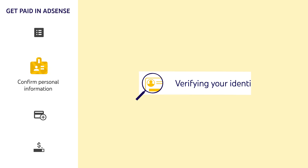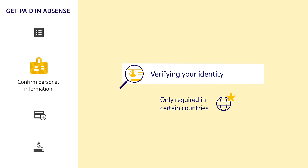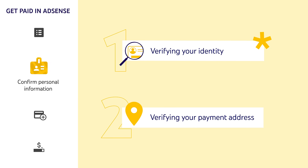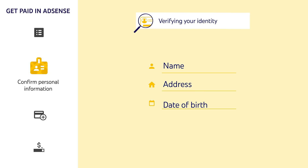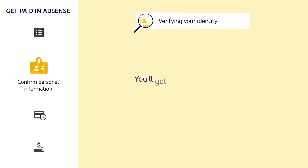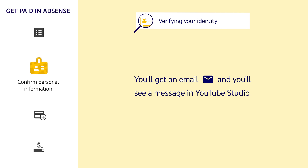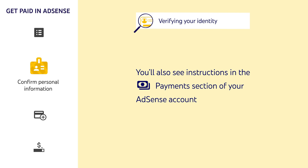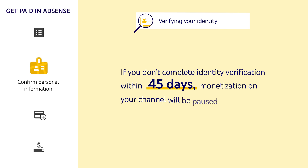Now let's talk about verifying your identity, the other potential step in confirming your personal information. Identity verification is only required in certain countries, but if you are required to complete it, you'll need to do so before you can verify your payment address. You'll be asked to verify your identity using information like your name, address, or date of birth. If you need to verify your identity, you'll get an email, and you'll see a message in YouTube Studio letting you know that this step needs to be completed. You'll also see instructions on how to do this in the payment section of your AdSense account. Note that if you don't complete identity verification within 45 days, monetization on your channel will be paused.